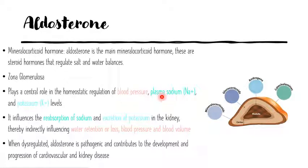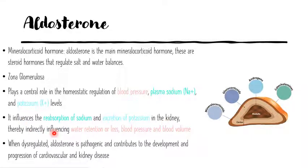Because it's influencing sodium, it also influences blood pressure by controlling the blood volume. It does so by reabsorbing sodium and excreting potassium in the kidney, thereby influencing water retention or water loss, leading to changes in blood volume and subsequently blood pressure. If you just keep sodium and potassium in mind, understanding the pathogenesis of any disease arising from dysregulation of aldosterone becomes really easy.